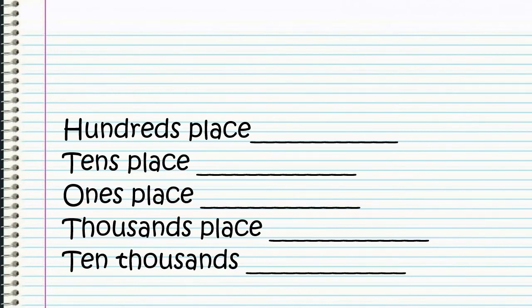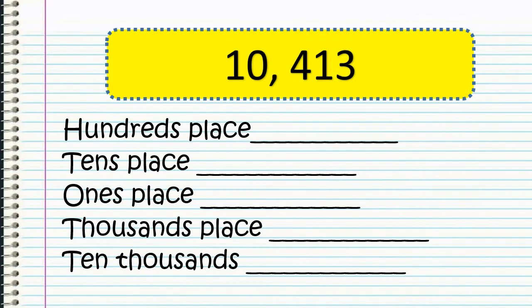Let us try another example. We have 10,413. Which digit is found in the hundreds place? It's number 4. How about in the tens place? It's number 1. How about in the ones place? It's number 3. How about in the thousands place? We got 0. And the ten thousands place? It's number 1.